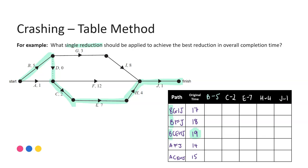Everywhere there's a B, I'm going to subtract 5. From the first path, 5 off 17 brings it down to 12. 5 from 18 comes down to 13. 5 from 19 comes down to 14. There's no B in AFJ, so it stays at 14. And no B in the final path, so that stays at 15. Our critical path will be the longest time. Comparing to the original, if I was to reduce activity B, I could save 4.